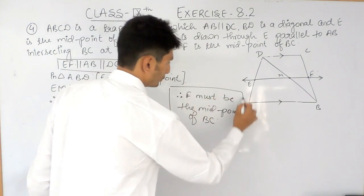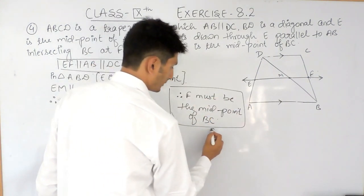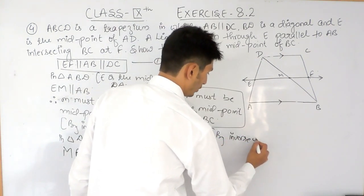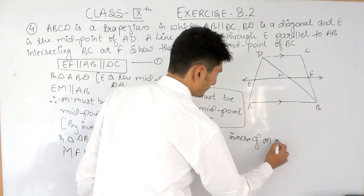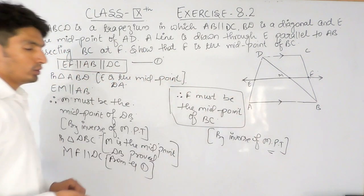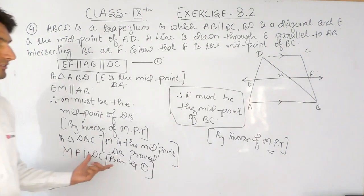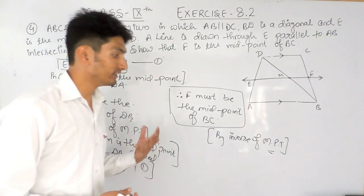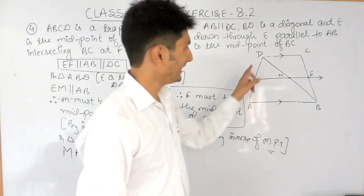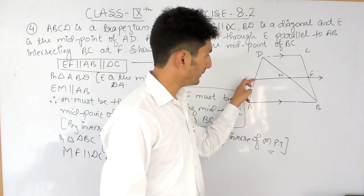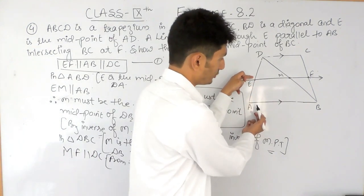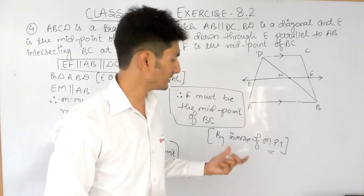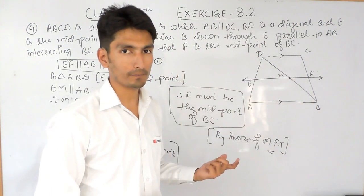This is what we have proved, and it is by the inverse of the midpoint theorem. According to the inverse of the midpoint theorem: in a triangle, from the midpoint of one side, if you draw a parallel line to the second side, it must divide the third side at its midpoint. This is the inverse of the midpoint theorem.